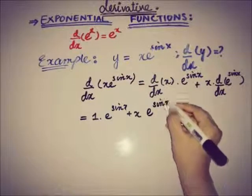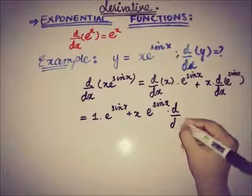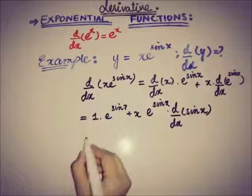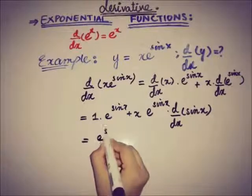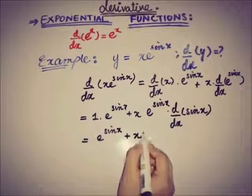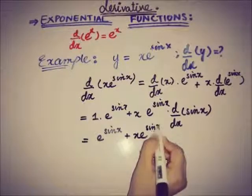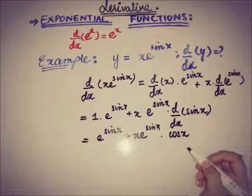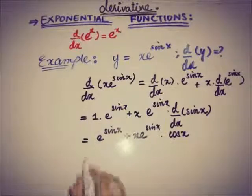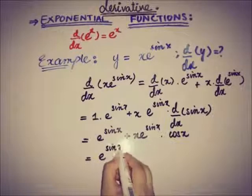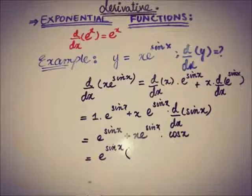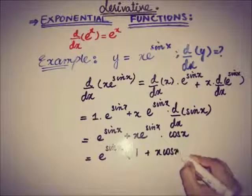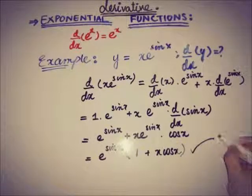The derivative of e to the power sine x equals e to the power sine x times the rate of change of sine x, which is cosine x. So the result is e to the power sine x plus x times e to the power sine x times cosine x. We can factor out e to the power sine x, leaving us with e to the power sine x times the quantity one plus x cosine x. This is the rate of change of the function.